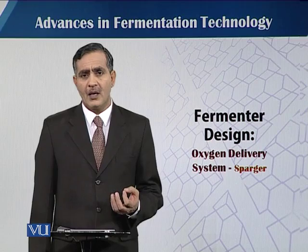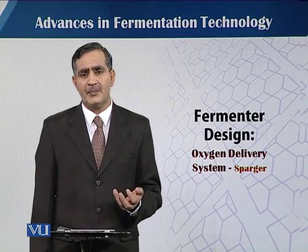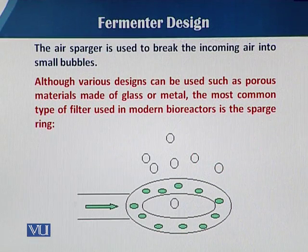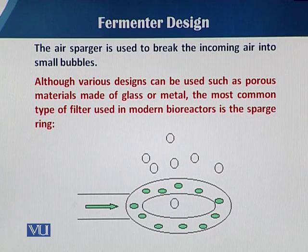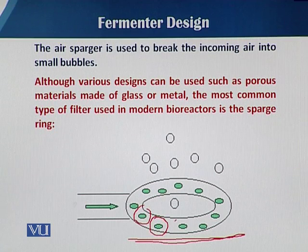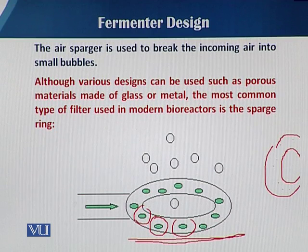What is a sparger and what is its role in the oxygen delivery system? The air sparger is used to break the incoming air into small bubbles. When air comes through the compressor and then enters through the air sterilization system and into the fermentation medium, there are small pores or slits — they may be round or slit-shaped — so there are different designs and shapes of the sparger.